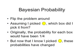So with Bayesian probability, what you do is you kind of flip the problem around. Before I said that we're picking a box at random and then a circle at random — what's the probability that it's yellow? Now I'm saying, let's assume that I already picked a yellow circle. Which box did I pick it from? Well, originally the probability for each box was just a quarter, but now that I know I picked a yellow circle, these probabilities have changed.